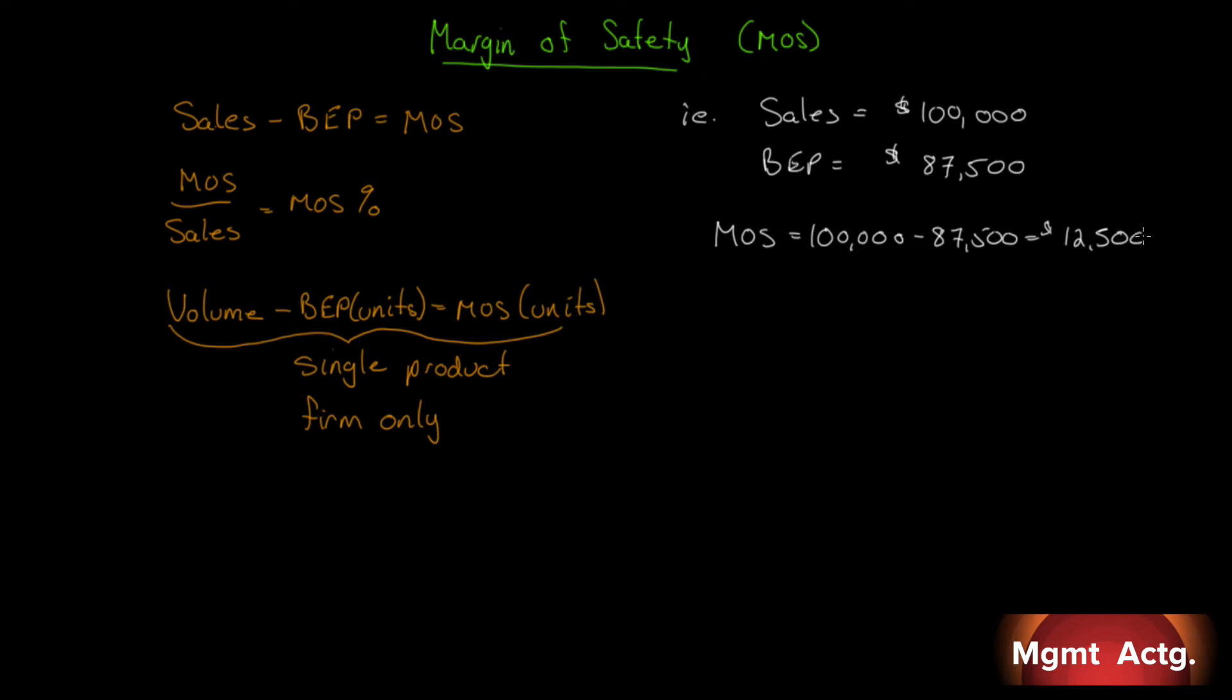Another way of saying that is our margin of safety percentage, 12,500 over sales, over 100,000, is to say that sales can fall 12.5% from its current location of 100,000 before we hit break-even. So sales can fall $12,500 or 12.5%. That's margin of safety. Nice and simple, wasn't it?